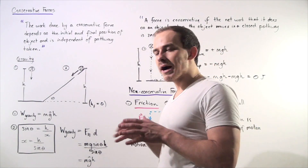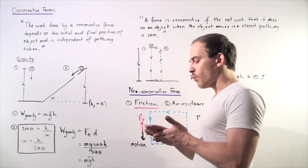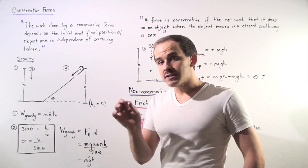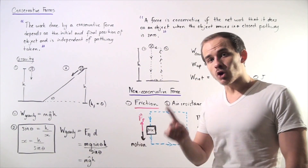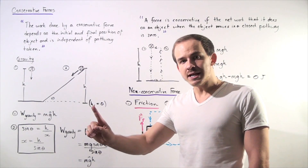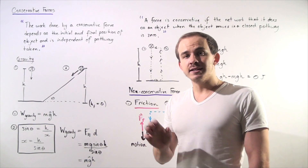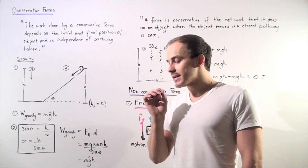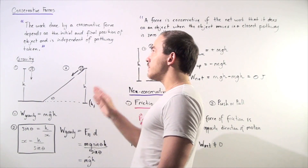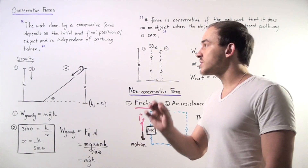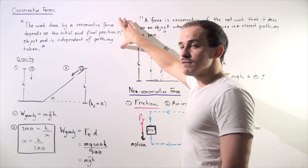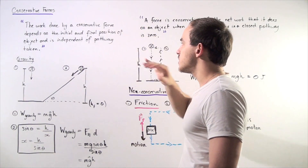Let's begin our discussion by defining what a conservative force is. The work done by a conservative force on an object only depends on the object's initial and final position and is independent of the pathway taken by that object. One very common example of a conservative force is the force of gravity, and the force of gravity fits this definition very well, as we'll see in just a moment.